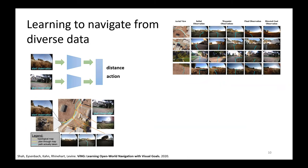By itself, this kind of model can reach nearby goals — on the order of about 50 meters in front of you or to the sides. If you want to reach very far away goals, you have to combine this with some kind of planning approach. A really simple planning approach works great here: we use a topological map constructed from other observations the robot saw in the environment. This is not running SLAM; it's just taking other images the robot saw. All you need are the images, connected with a graph where the edges are the distances predicted by this model. For the endpoints of each edge, you feed in the images, ask the model to predict the distance, and label the edge with that distance. Now you can use that graph to plan paths to distant goals.